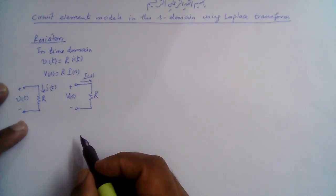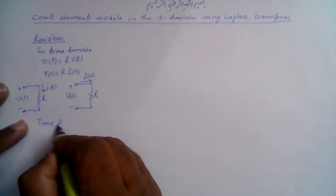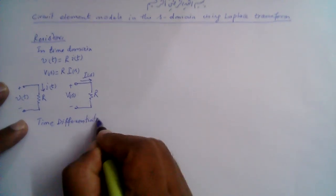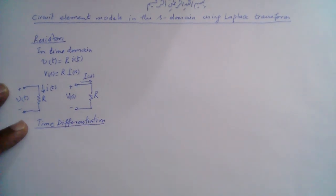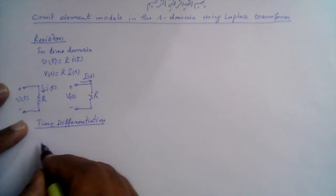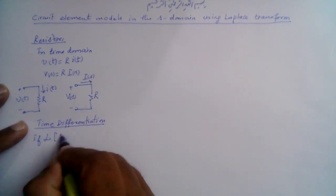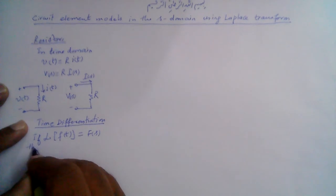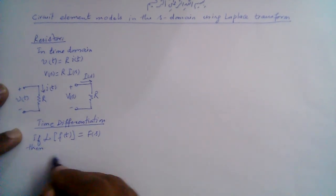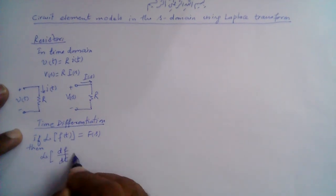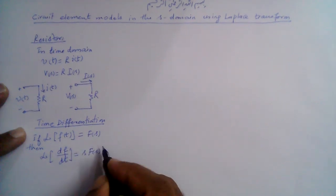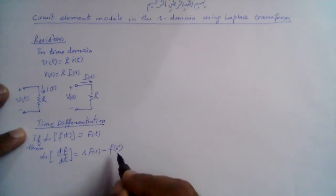For the inductor and capacitor, we are going to use the time differentiation property of the Laplace transform. According to this property, if the Laplace transform of f(t) is equal to F(s), then the Laplace transform of df/dt, the first derivative, is equal to s multiplied by F(s) minus the value of f at time zero negative.